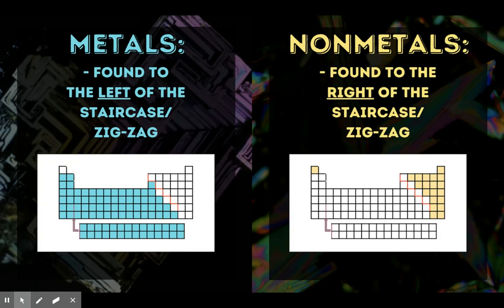As far as where they are found on the periodic table, metals are found to the left of that zigzag or staircase, which you can see right here, except for one little block. And on the right of the zigzag, you can see our nonmetals, and that one little block is now full.